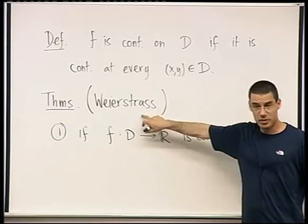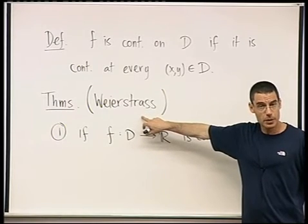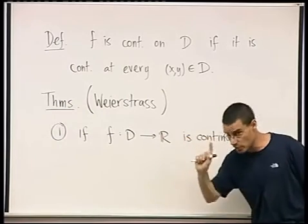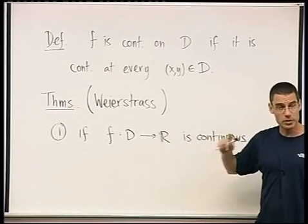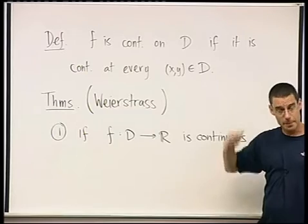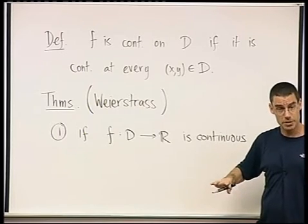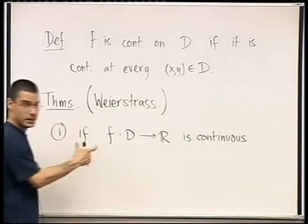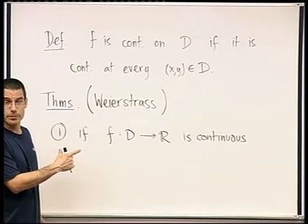Do you know what I mean when I say Weierstrass theorems? Okay? Continuous functions on certain domains are always bounded and have a maximum and a minimum, right? That's the theorem that I want to write. And what was the requirement on the domain in calculus one? Do you remember?